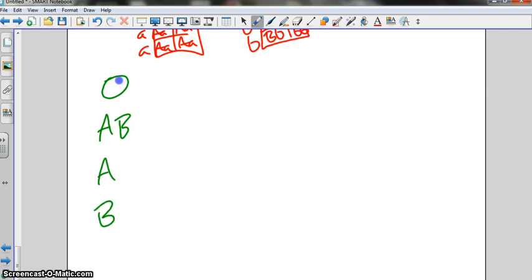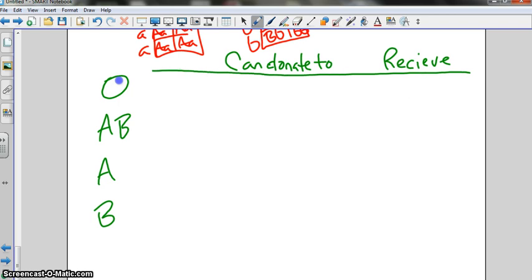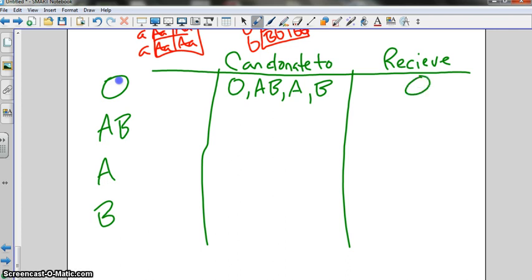And what this chart wants to know is who can donate to who and who can receive. So, we said the other day that O was what? Universal donor. So, that means they can give to type O, they can give to type AB, they can give to type A and type B. So, we call them the universal donor. But who can they receive from? O. They can only receive from type O.